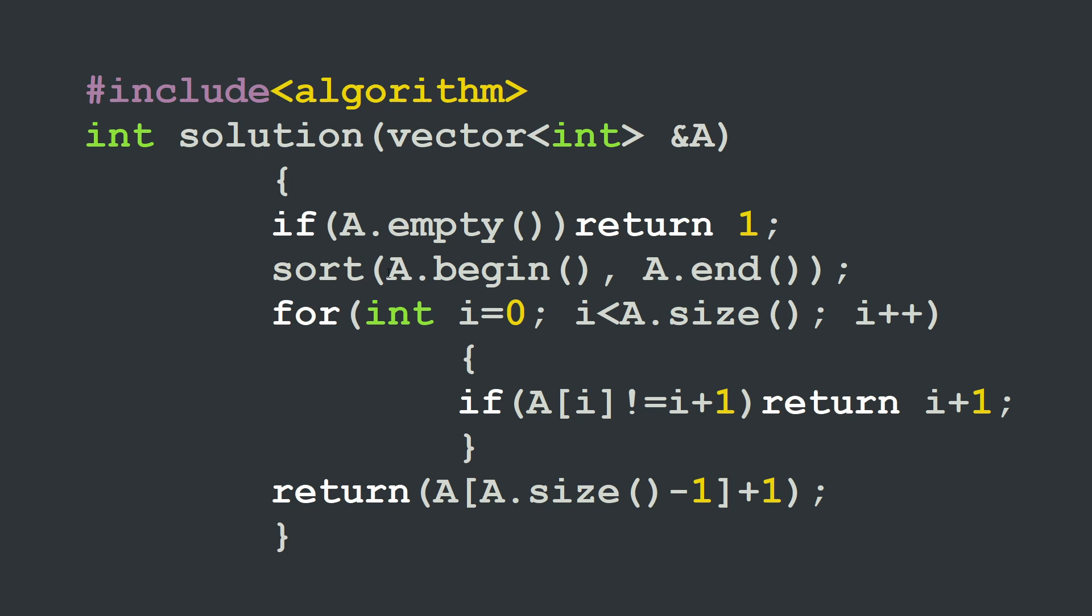Then we will use the sort function to sort our array from the beginning to the end. So it takes two parameters: A.begin, A.end. These are the two pointers where you want to start your sorting and end your sorting. And to use this function I should include the library algorithm.